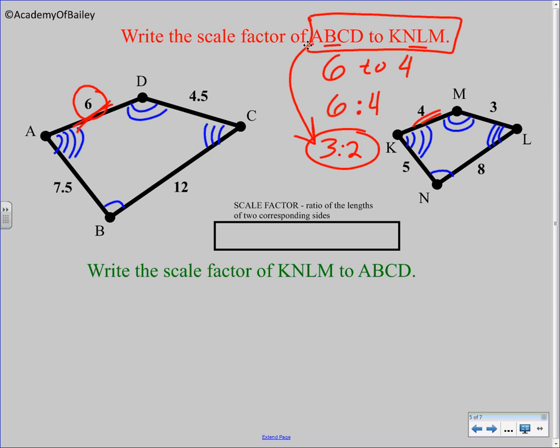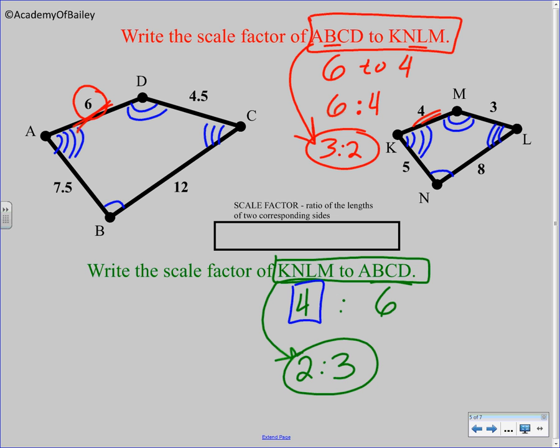Now down here below, when we say K, N, L, M to A, B, C, D, well that just switches the numbers around. We would pick four from K, N, L, M, six from A, B, C, D, and then reduce. And so that scale factor of K, N, L, M to A, B, C, D is two to three. That's why it's real important for you to pay attention to which one is going first. K, N, L, M goes first here, and A, B, C, D goes first here, so that's the number that goes first. And then you can figure out what number comes after.